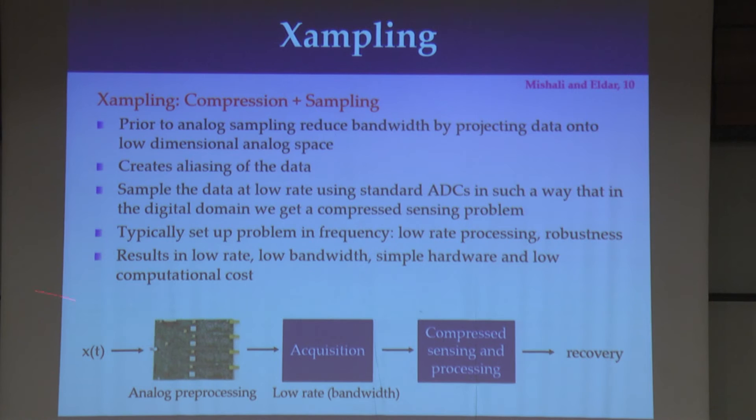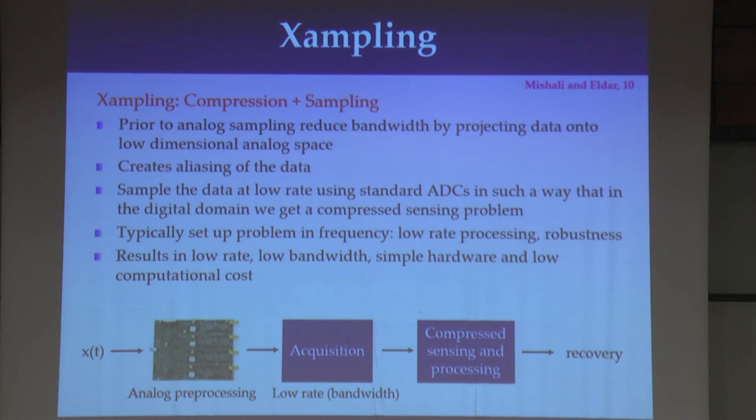The overall flow is as follows: we have our signal, we pre-process it by analog means — this is what does the aliasing — we then acquire the signal with the low-rate ADC, and finally in the digital domain we use standard techniques like compressed sensing or different subspace identification methods in order to recover our signal. Now we have to explain each one of these blocks, starting with the analog pre-processing — how we actually do it and why we need it. Why can't we just go ahead and sample our data at a low rate?